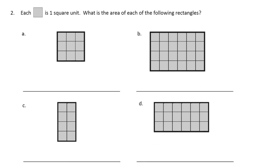Each of these is a square unit. What is the area of each of the following rectangles? This one is three by three, so it's one, two, three, four, five, six, seven, eight, nine — it's nine square units.